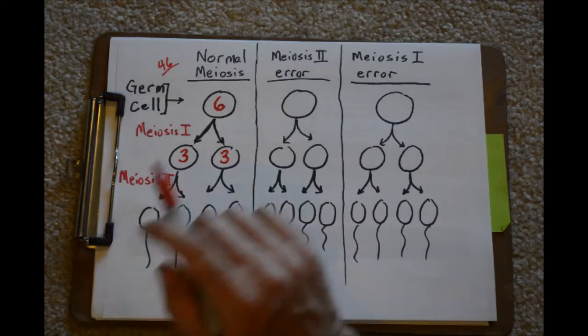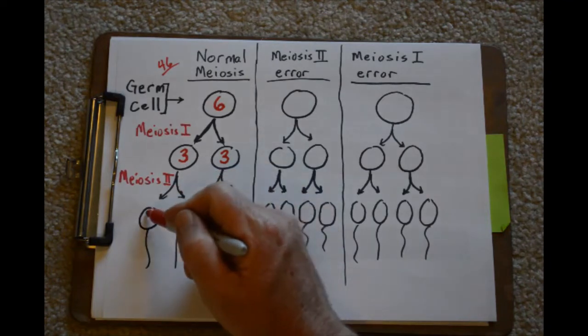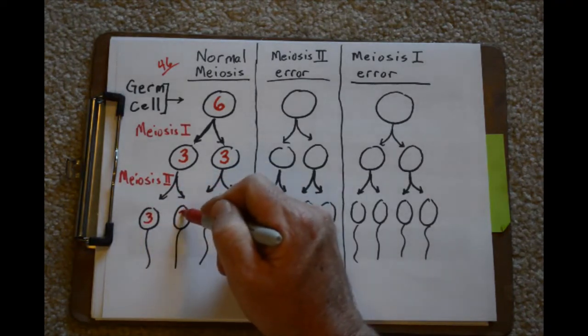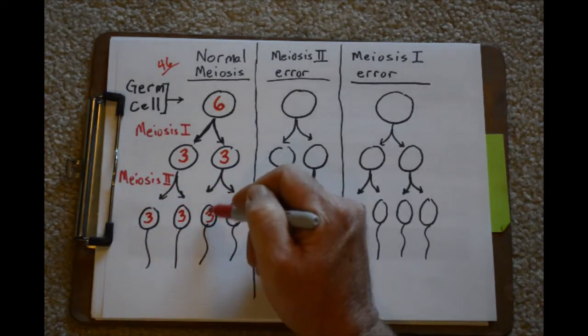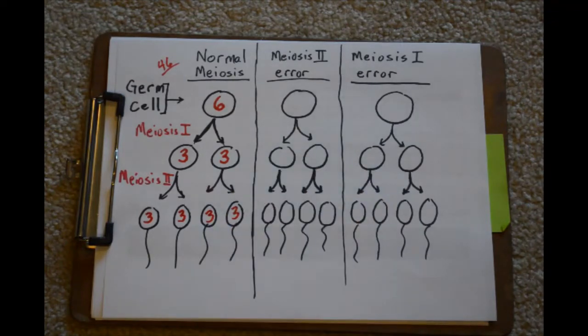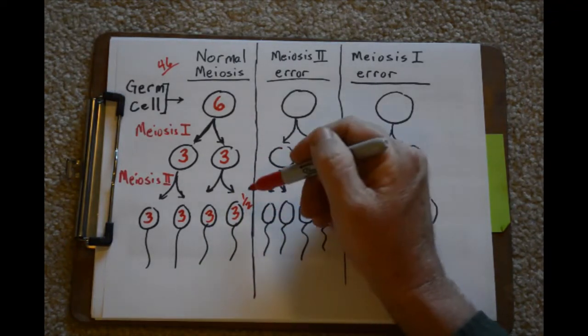have identical information, so we really just have three chromosomes worth of information. Then we split up the sister chromatids in meiosis II and end up with three in each, which makes sense because this is half of the genetic information. So what if you got to this point and all of these